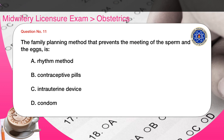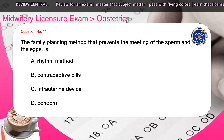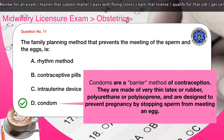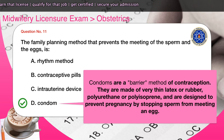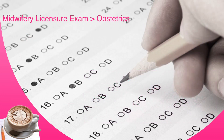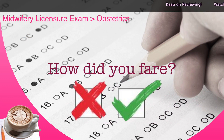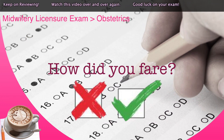Question number eleven: The family planning method that prevents the meeting of the sperm and the egg is — A) rhythm method, B) contraceptive pills, C) intrauterine device, D) condom. The correct answer is D. Condoms are a barrier method of contraception made of very thin latex, rubber, polyurethane, or polyisoprene, and are designed to prevent pregnancy by stopping sperm from meeting an egg.